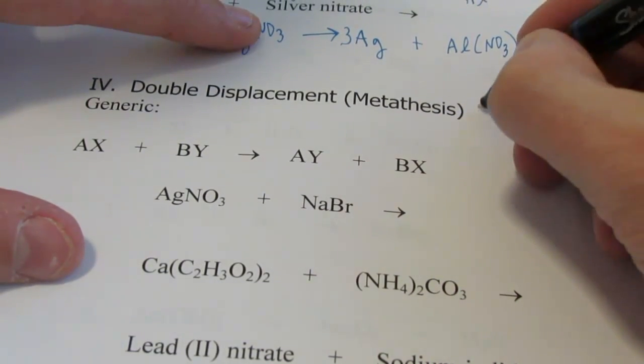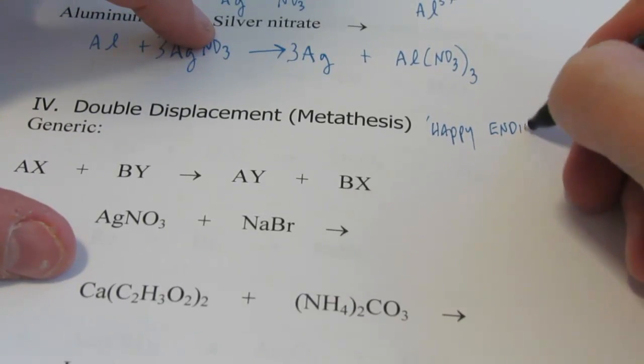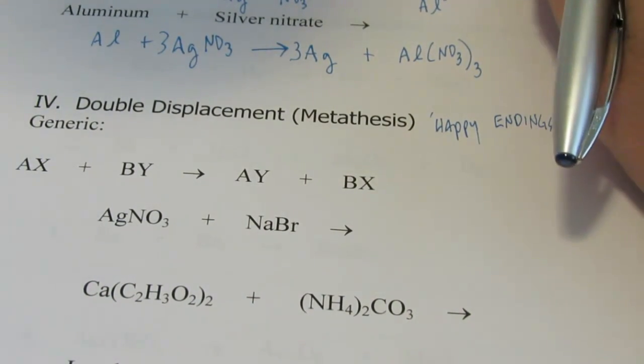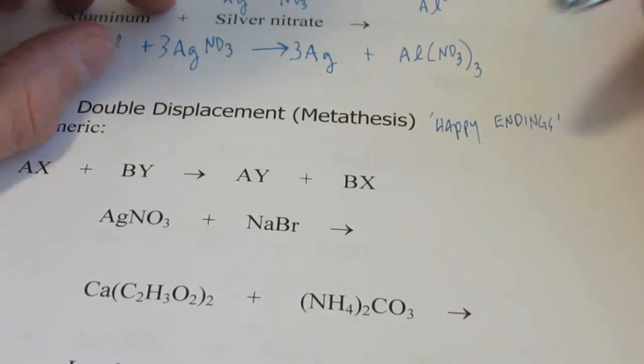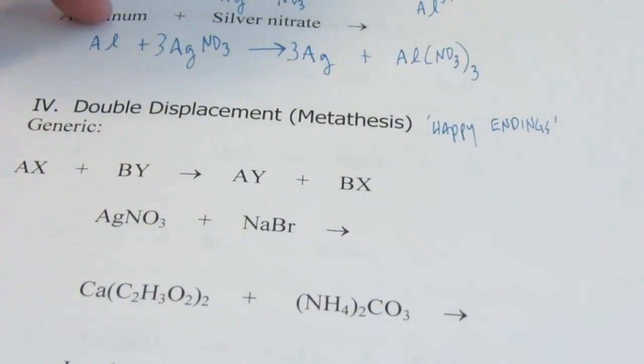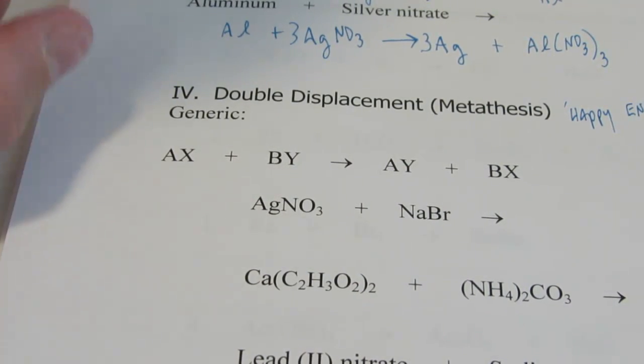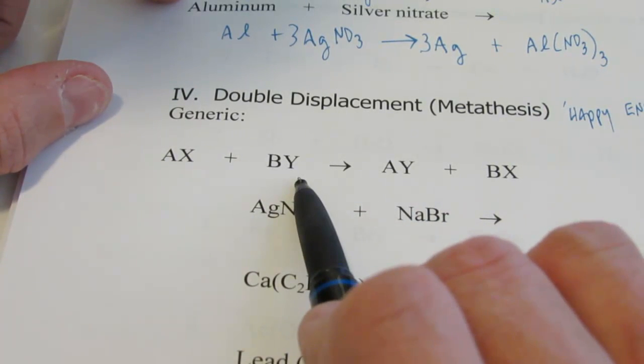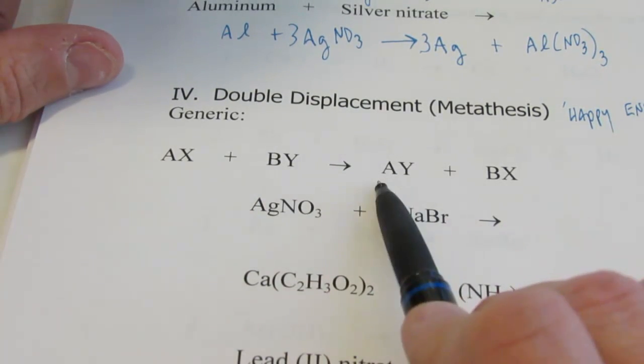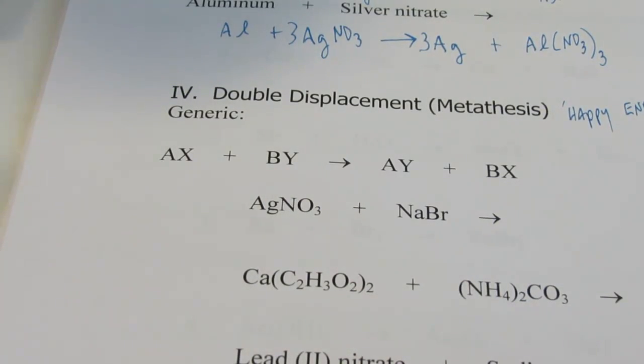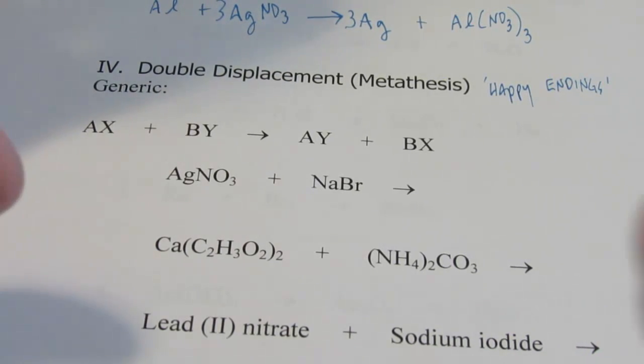Double displacement. We're going to call this one Happy Endings. I'm sure there's lots of movies out there that are like this, where a boy is with a girl, and then there's another boy with another girl, and they realize that they're better off with the other person. I think the movie Enchanted is like that. So take a look at the generic equation. I'm not going to humor you with a picture this time. We have compound AX reacting with compound BY. A and B both switch. So A is now with Y, and B is now with X. It's called double displacement. Some textbooks call it metathesis. You pronounce it or call it what you like. Just make sure you can identify it.